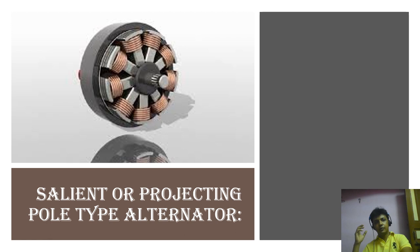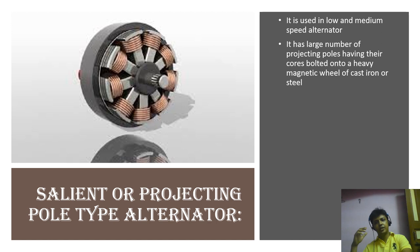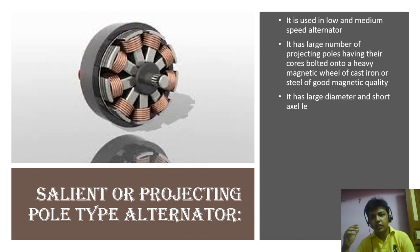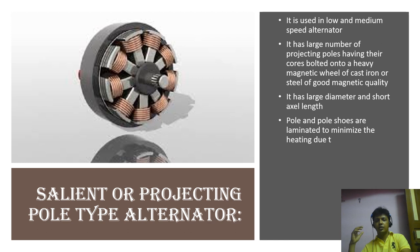Now we are going to discuss about salient pole or projecting pole types alternator. It is used in low and medium speed alternator. It has large number of projecting poles having their cores bolted onto a heavy magnetic field of cast iron or steel of good magnetic quality. It has large diameter and short axial length. Pole and pole shoes are laminated to minimize the loss due to eddy current. Where the speed is less, that is centrifugal force is low, mainly in water turbine, salient pole rotor is used.